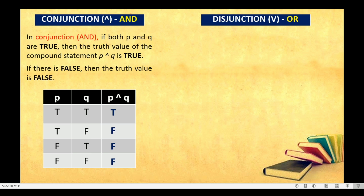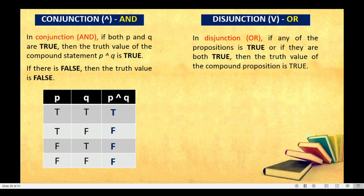Now let's proceed to the law of disjunction, which uses 'or.' The law of disjunction states that if any of the propositions is true, or if they are both true, then the truth value of the compound proposition is true. Disjunction only needs one truth to produce a true truth value. This is opposite to conjunction — in conjunction, if there is even one false, automatically the truth value is false. In disjunction, even just one true is enough for the truth value to be true.